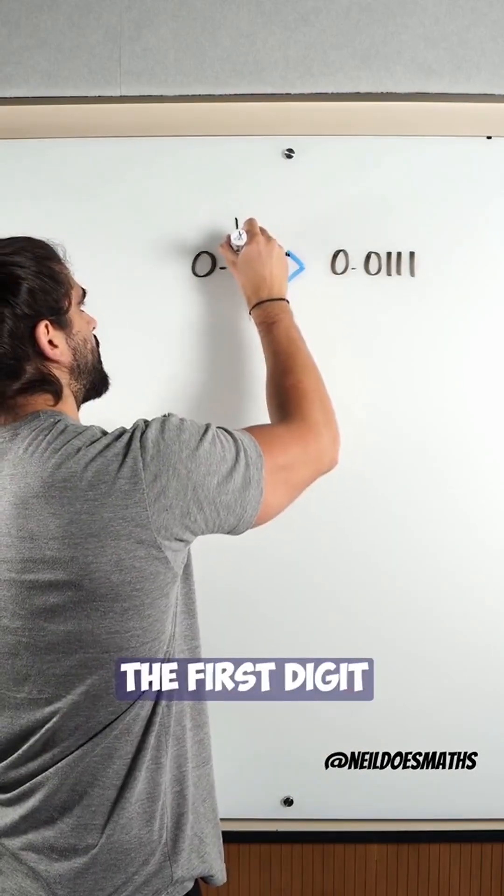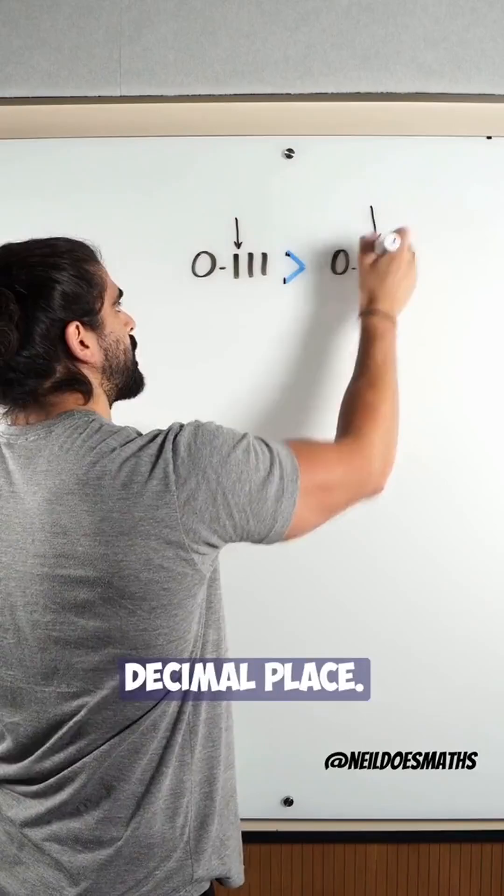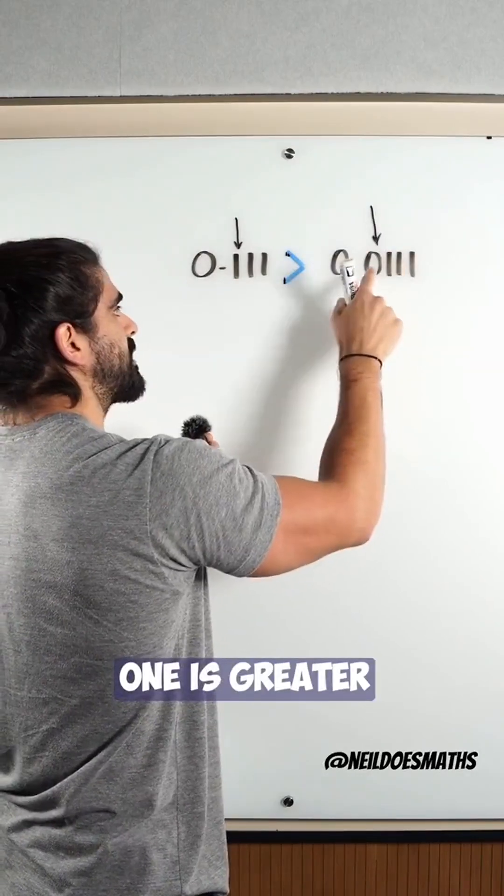Now, how do we know that? We look at the first digit after the decimal place. One is greater than zero.